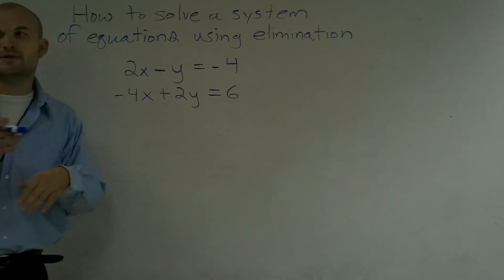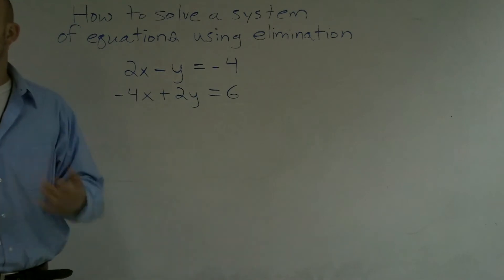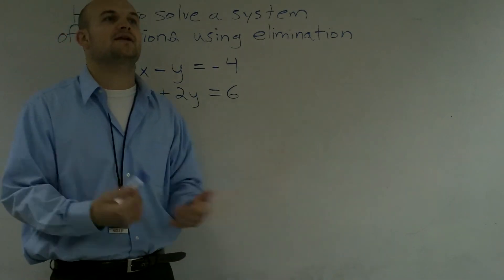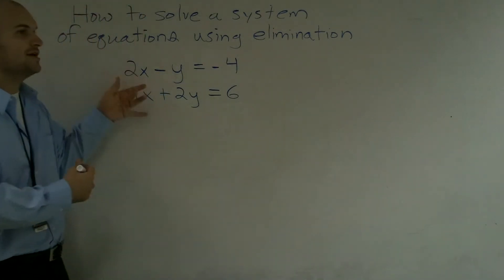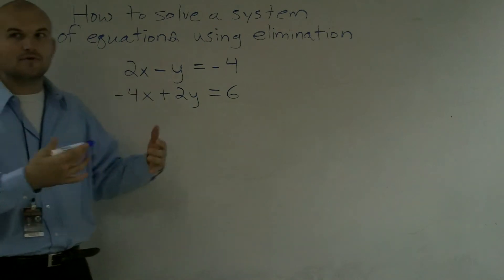The reason why we use elimination is we're either adding or subtracting our two equations, and what we're doing is actually eliminating a variable. Because when you have two equations and two variables, you can only solve for one variable at one time.